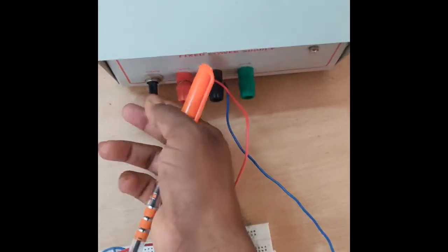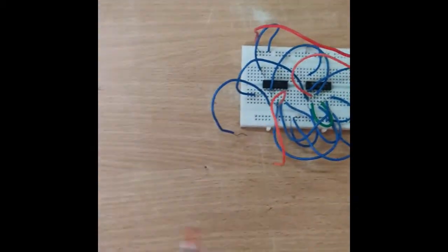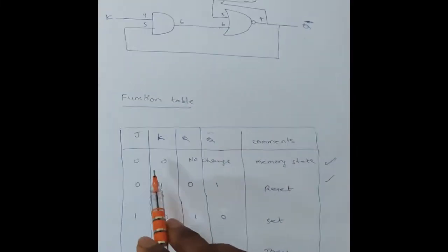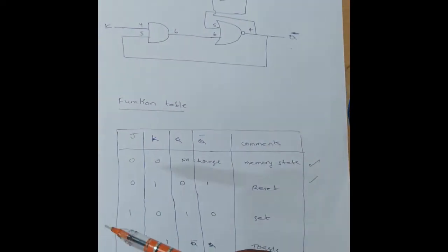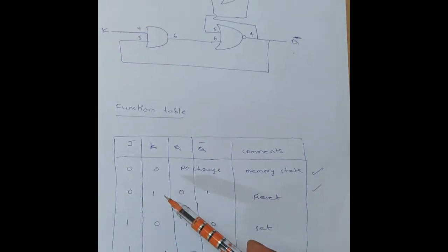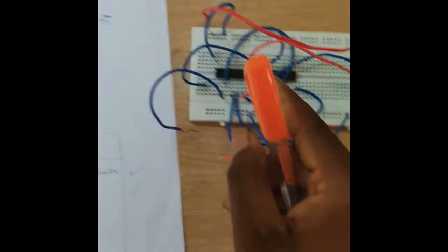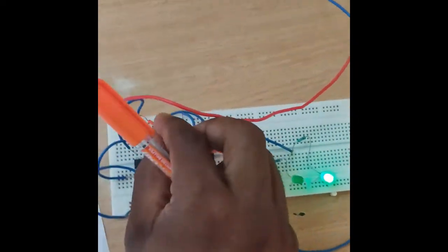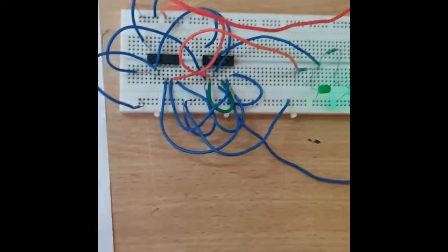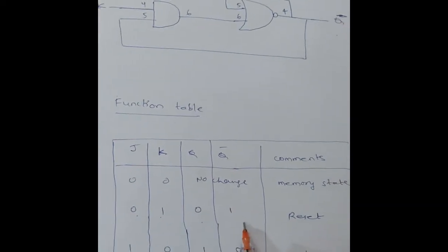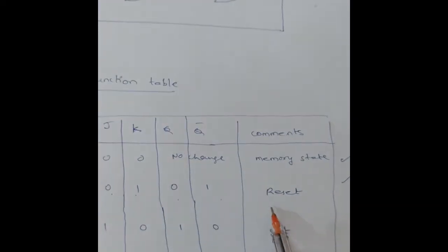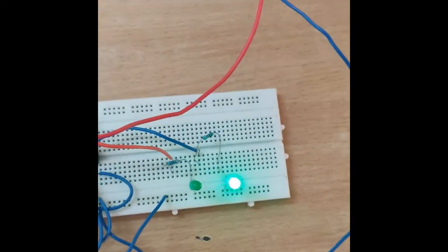Now switch on the fixed power supply. First combination 00 is the memory state, but we don't know the previous output, so we give the 01 combination first. J is given 0, K is given 1, so outputs are 01. Inputs 01, outputs 01 — this is the reset condition. This is verified.